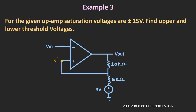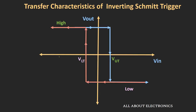For the inverting Schmitt Trigger, the hysteresis curve looks like this. Whenever the output voltage is high, the value of V+ defines the upper threshold voltage. When the input goes beyond this upper threshold, there is a transition from +15V to −15V. When the output is −15V, V+ defines the lower threshold voltage, and when input goes below it, the output transitions from −15V to +15V.